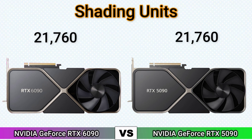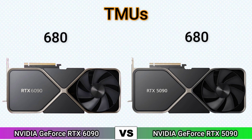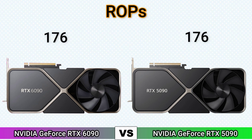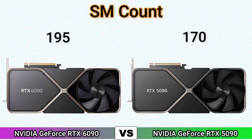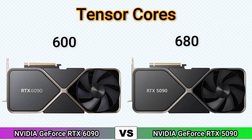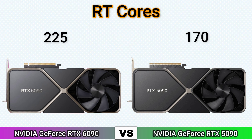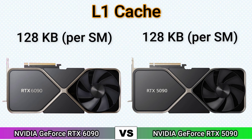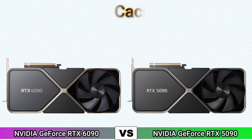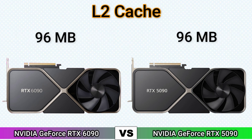Shading units, texture mapping units, render output units — same count. Tensor cores, RT cores, L1 cache, L2 cache.